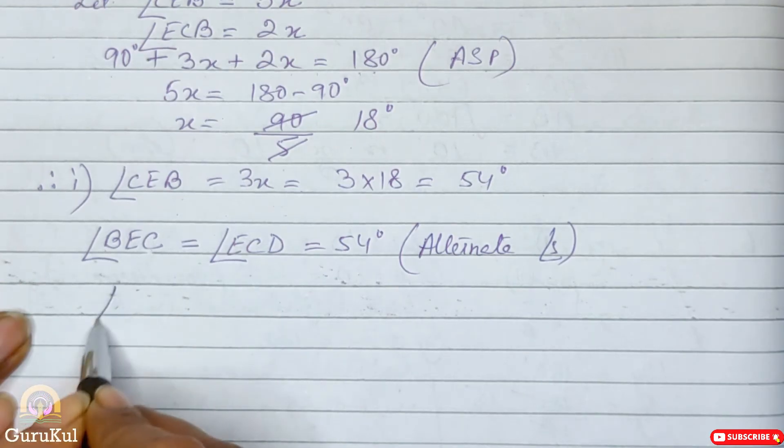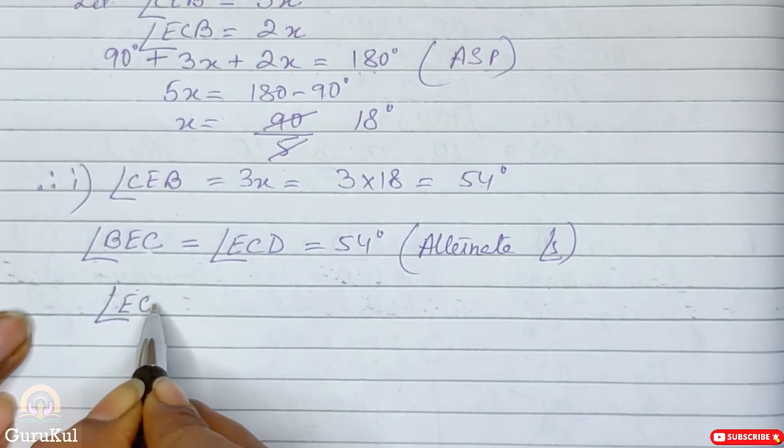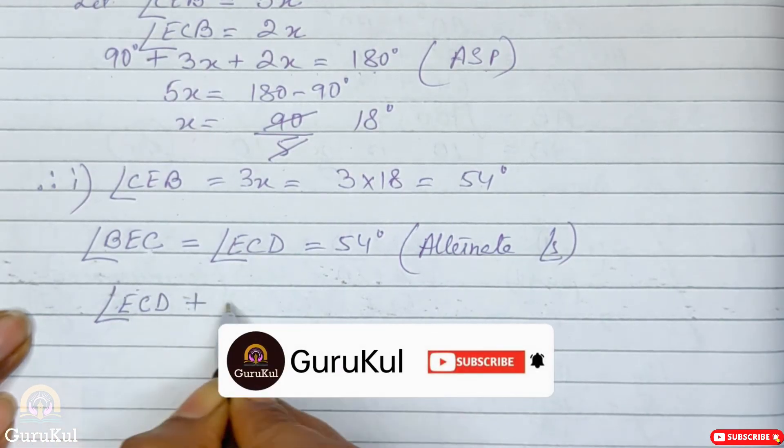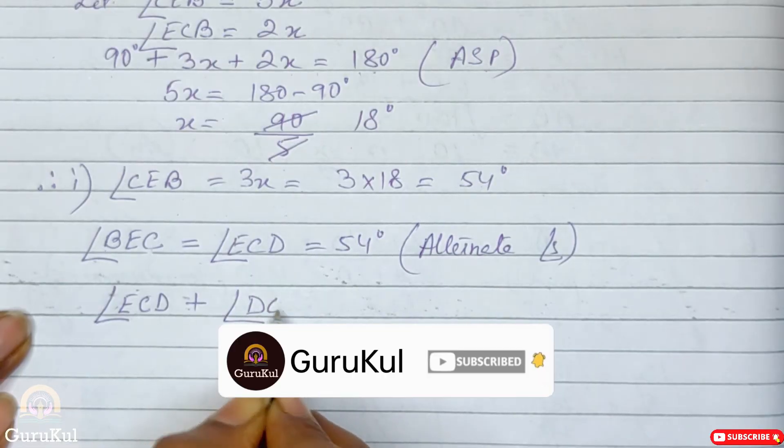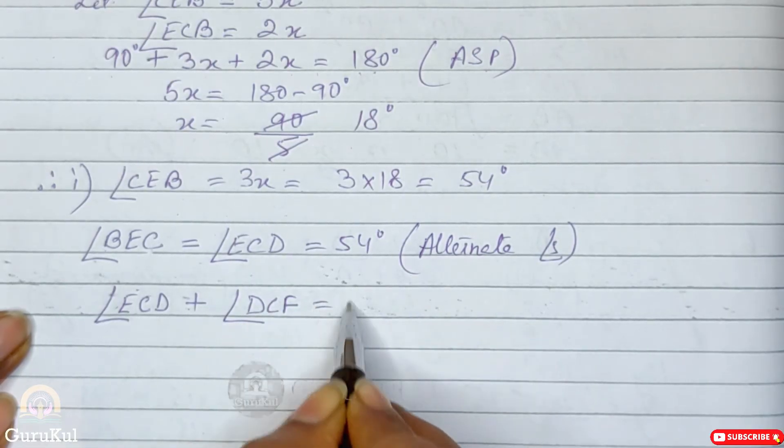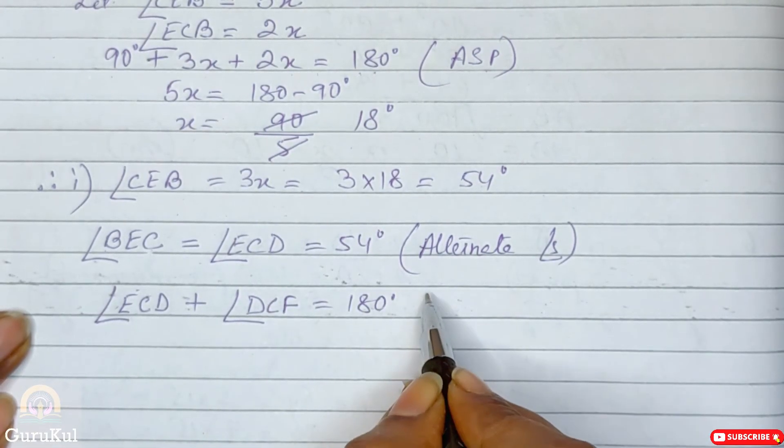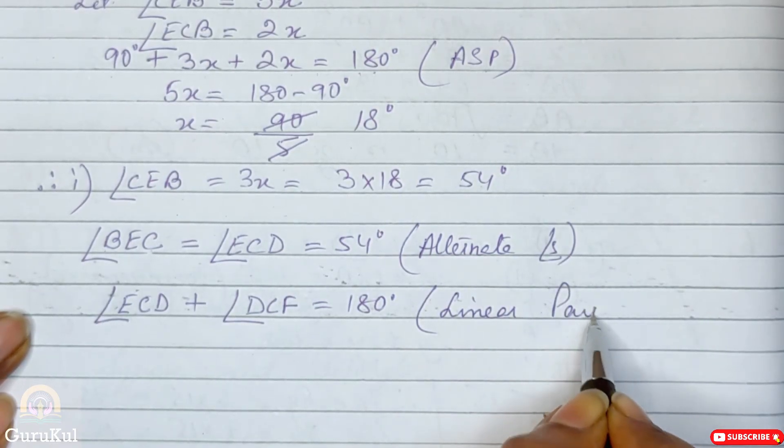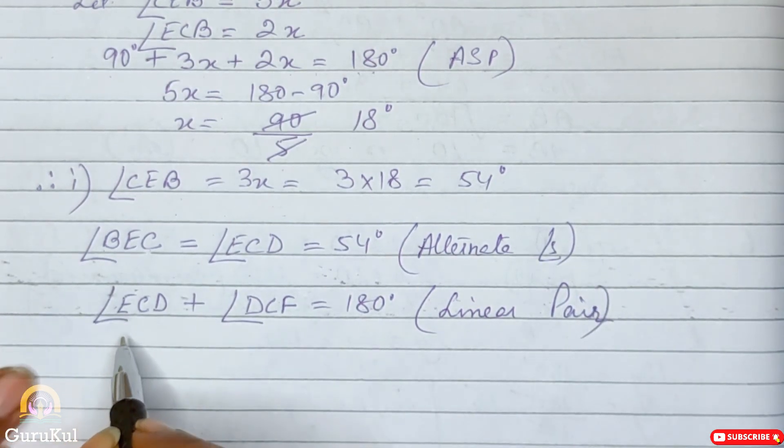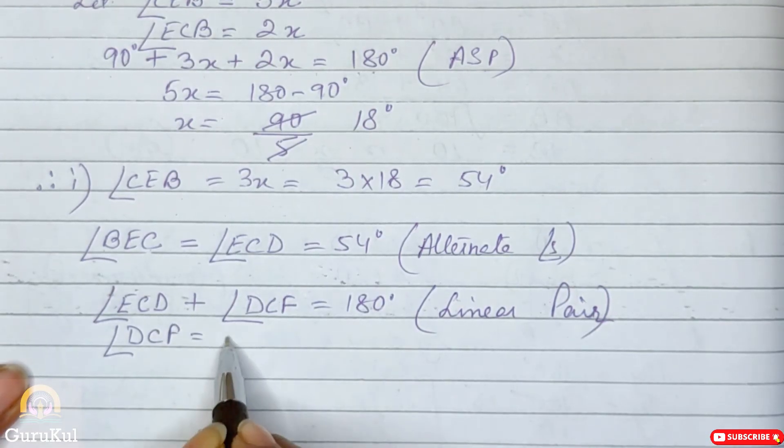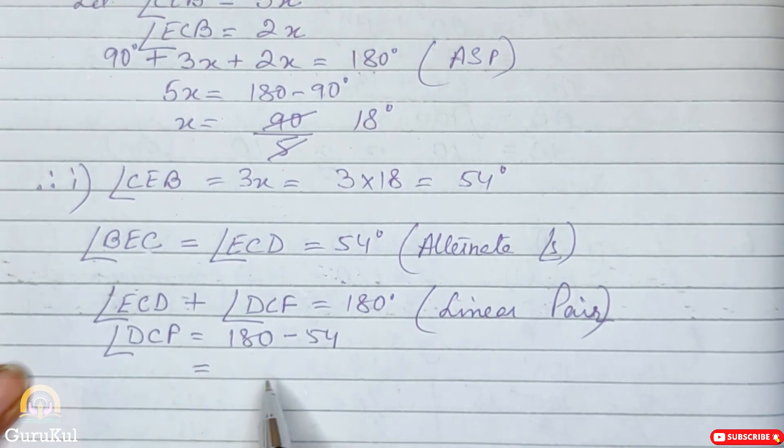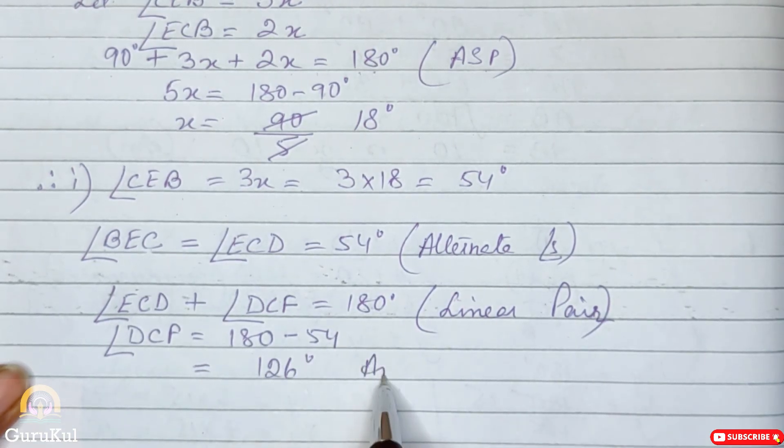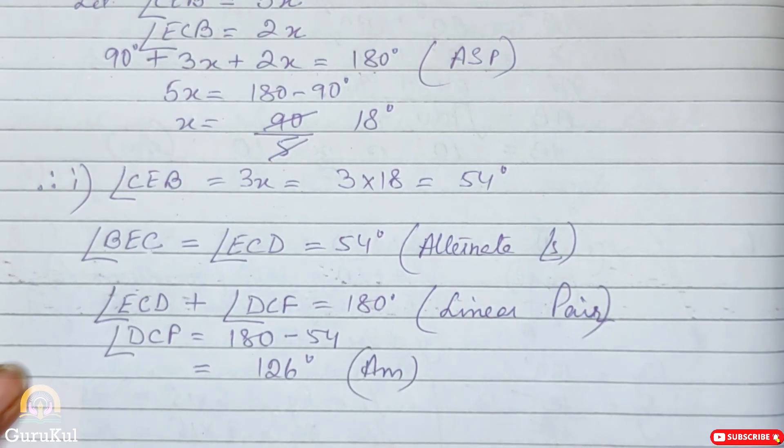Next, angle ECD plus angle DCF is equal to 180 degree. Reason is linear pair. So angle DCF is equal to 180 minus 54 that gives us 126 degree and this is the answer.